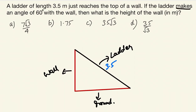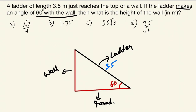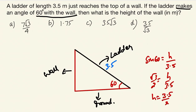If the ladder makes an angle of 60 degrees with the wall — here most students make the mistake of using sin 60. So sin 60 equals height of the wall divided by the hypotenuse. The ladder is 3.5, so root 3 by 2 equals H by 3.5, giving H equal to 3.5 by 2 into root 3. They pick option A as the answer.